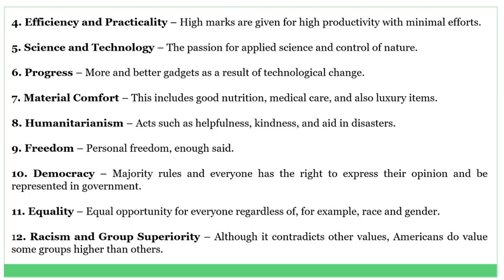Number nine: freedom — personal freedom and liberty. Number ten: democracy — majority rules and everyone has the right to express their opinion and be represented in government. Number eleven: equality — equal opportunity for everyone regardless of, for example, race and gender. Number twelve: racism and group superiority — although it contradicts other values, Americans do value some groups higher than others.